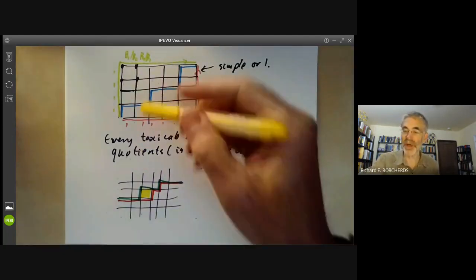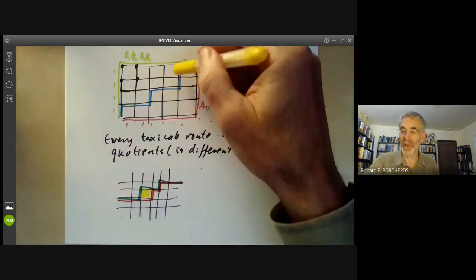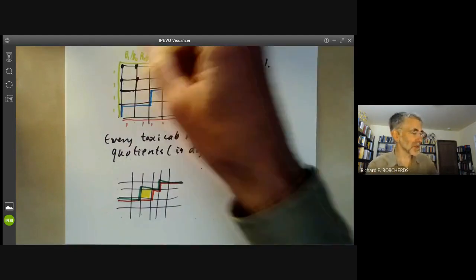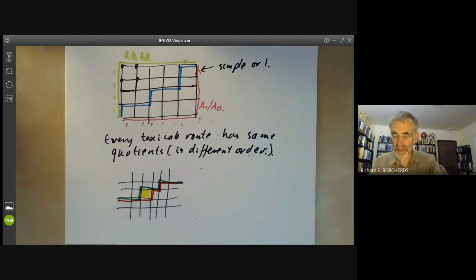And obviously, by repeating this operation, we can get from any taxi cab route to any other taxi cab route. We're assuming the taxi cab driver is honest and goes by the shortest route and doesn't start going round in circles or something, which wouldn't make a whole lot of sense. So let's look at what happens here.